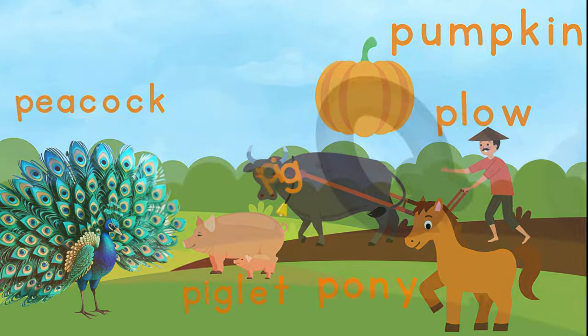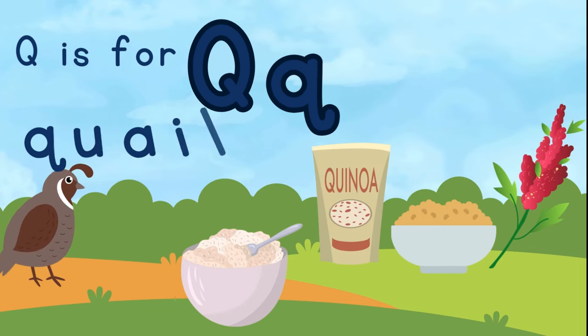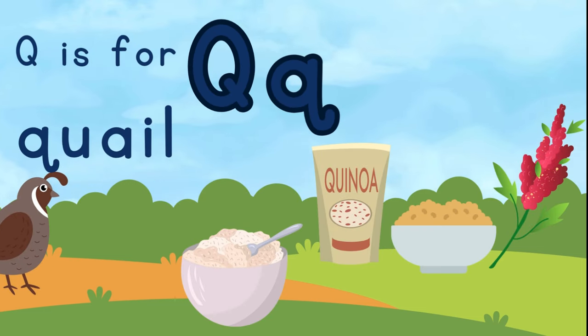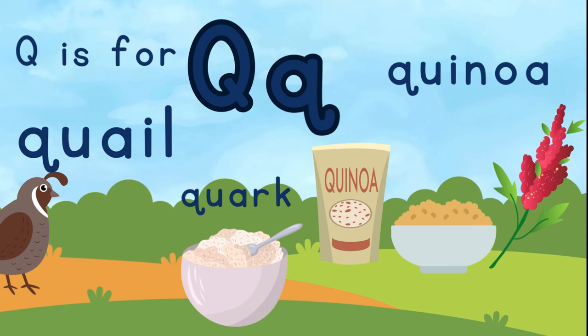This is the letter Q. Q is for quail. Q is for quark. And Q is for quinoa.